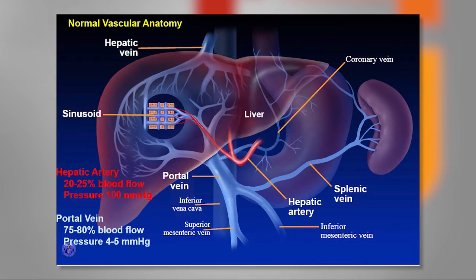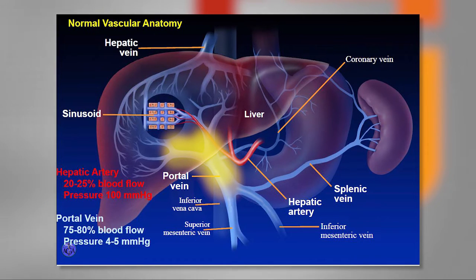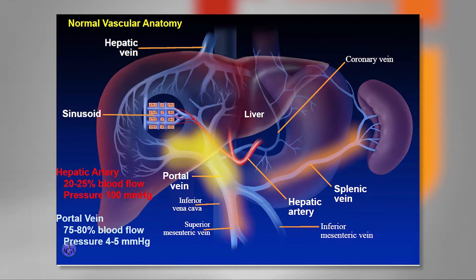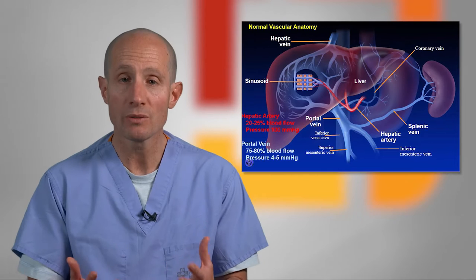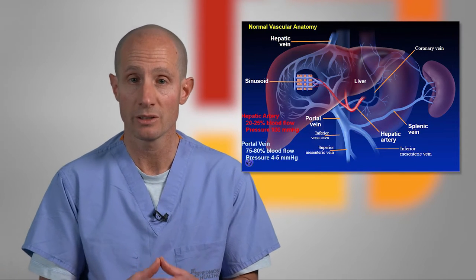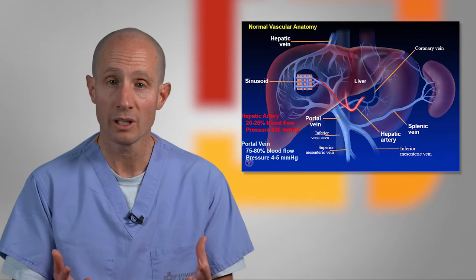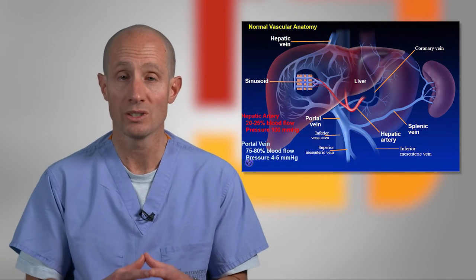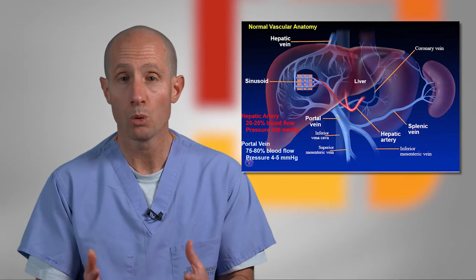Depicted in this diagram is the vascular anatomy of the liver, most notably the portal vein. The portal vein is comprised of the superior mesenteric vein and the splenic vein. This is the sole drainage of all of the organs within the abdomen. Most of the symptoms experienced by patients with end-stage liver disease stem from portal hypertension, which is the backup of blood in the portal system.